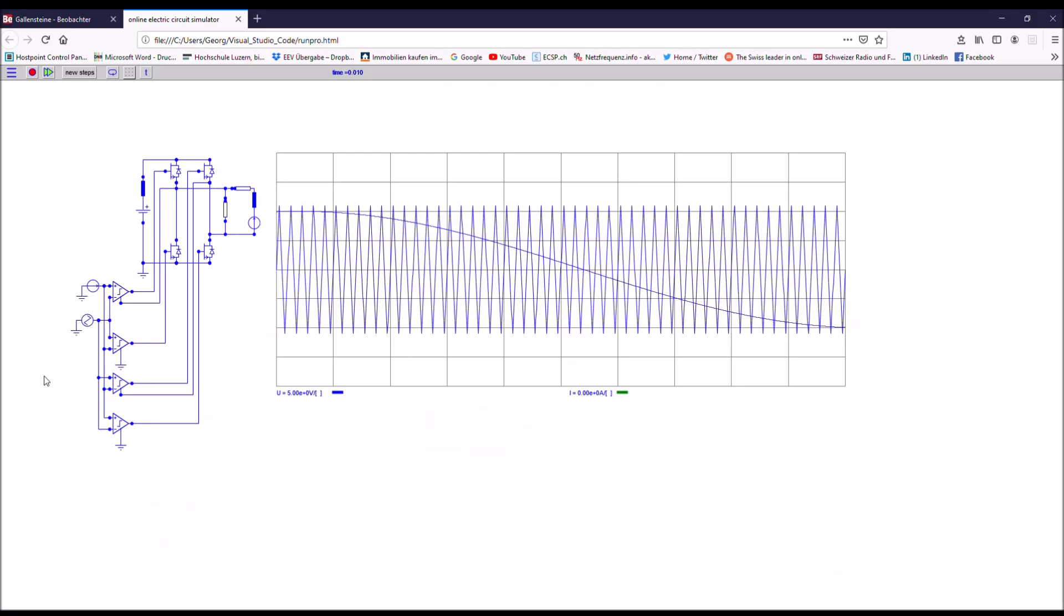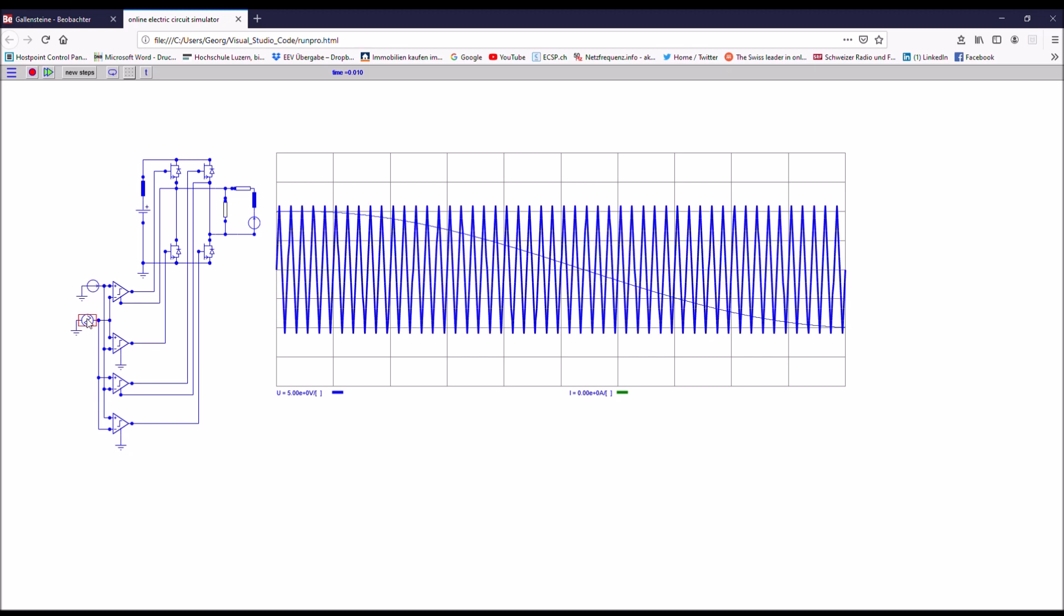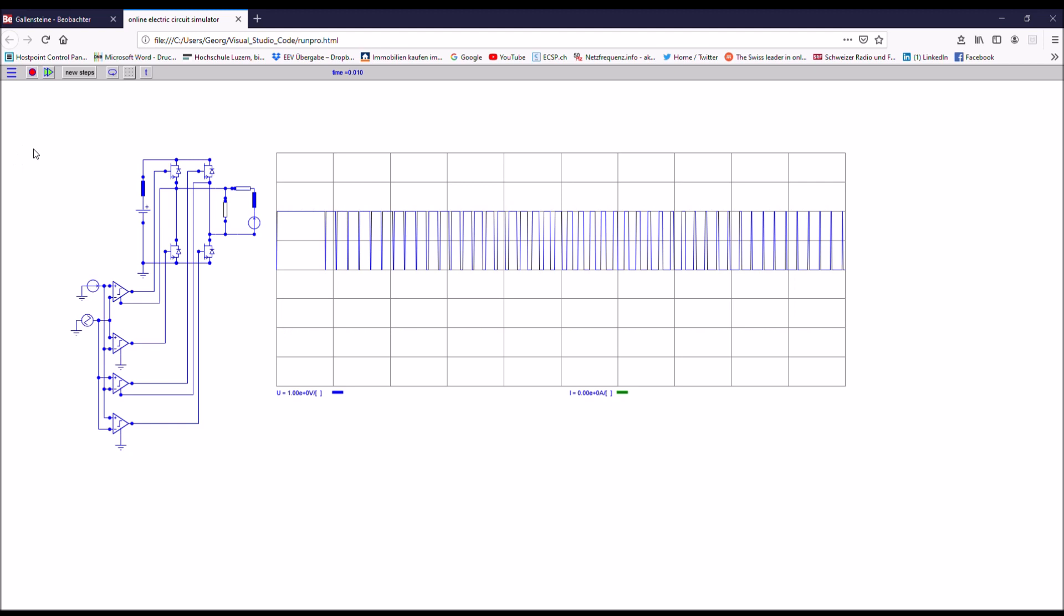To get such a PCM signal you electronically build a difference between a sinus voltage, which can be seen here, and a triangular voltage. The output signal of the differential amplifier is the PCM control signal. This control signal triggers the switches.